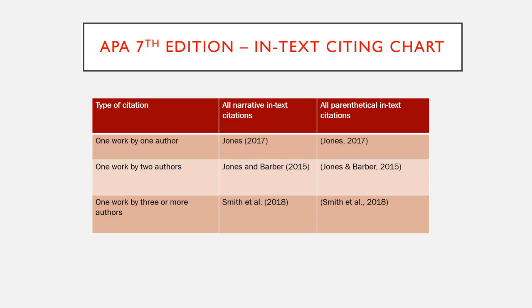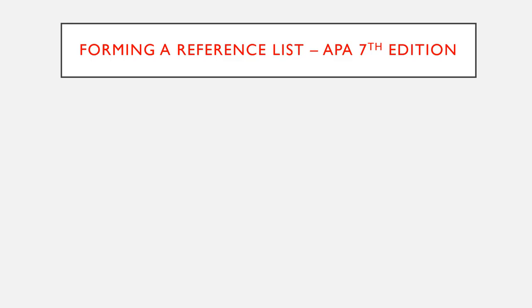Here is an in-text citing chart including the type of citation and variations of all narrative and parenthetical formats for in-text citing. Now that we know how to form in-text citations, the next section explains how to form a reference list.